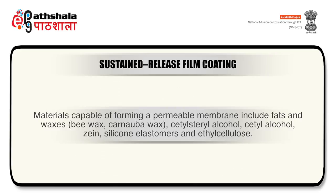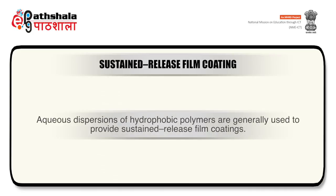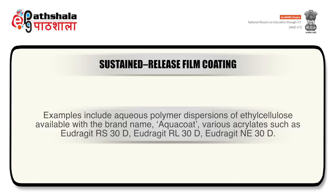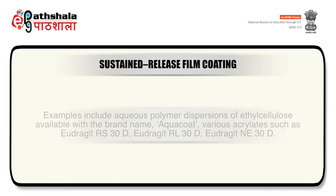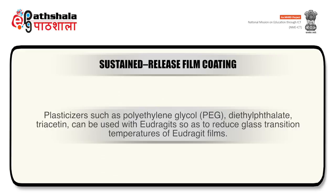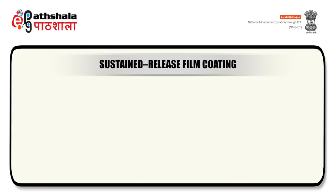Materials capable of forming a permeable membrane include fats and waxes, cetyl stearyl alcohol, cetyl alcohol, silicone elastomers, and ethyl cellulose. Aqueous dispersions of hydrophobic polymers are generally used to provide sustained release film coatings; examples include aqueous polymer dispersion of ethyl cellulose available as Aquacoat. Various acrylates such as Eudragit RS30D, Eudragit RL30D, and Eudragit NE30D are used. Plasticizers such as PEG, diethyl phthalate, and triacetin can be used with eudragits to reduce the glass transition temperatures of eudragit films.